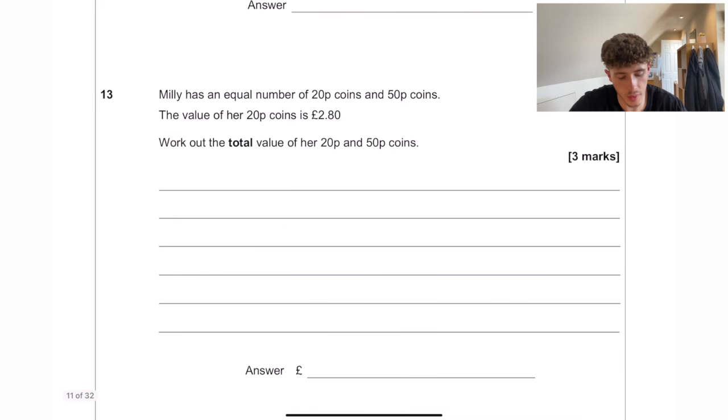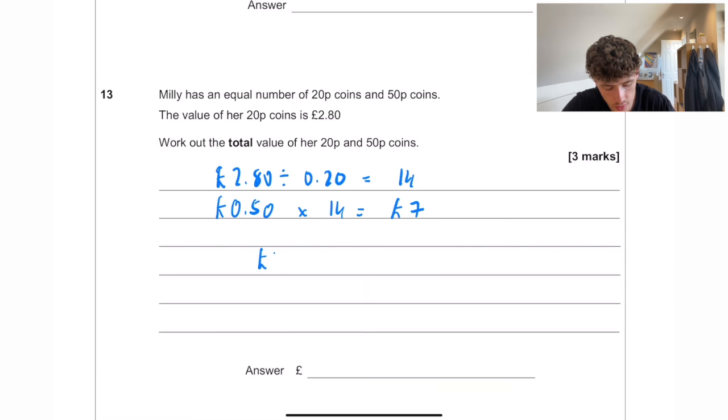Millie has an equal number of 20p coins and 50p coins. The value of her 20p coins is £2.80. So £2.80 divided by 0.2 is going to be 14 coins. So if we do 0.5 pounds, times by 14, that's going to get us £7. So £7 plus £2.80 is going to equal £9.80.